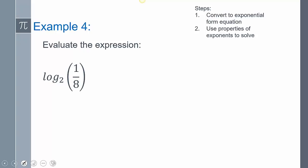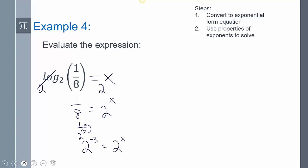Let's try log base 2 of 1/8. We don't know what it equals so we set it equal to x. Converting to exponential form by taking base 2 to both sides, the inverses cancel and we get 1/8 equals 2^x. Since 8 equals 2^3, we have 1/8 equals 2^(−3), so 2^(−3) equals 2^x. With the bases the same, we set exponents equal: negative 3 equals x. Since there's no x in the original problem, the answer is log base 2 of 1/8 equals negative 3.